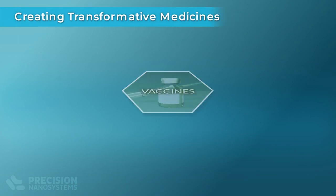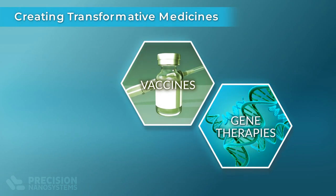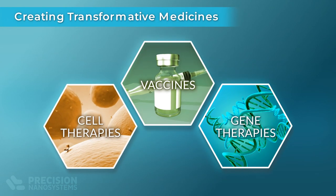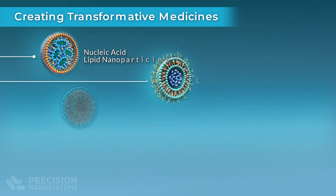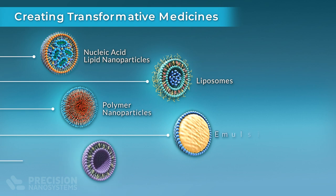Creating transformative medicines such as vaccines, gene therapies, and cell therapies involves packaging drug substances such as mRNA into nanoparticles that deliver the drug where it is needed in the body.